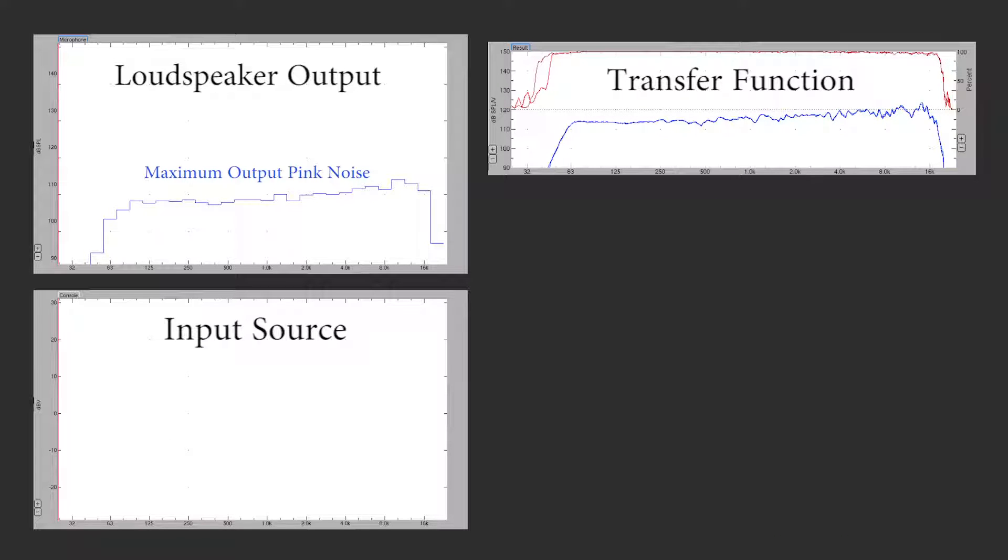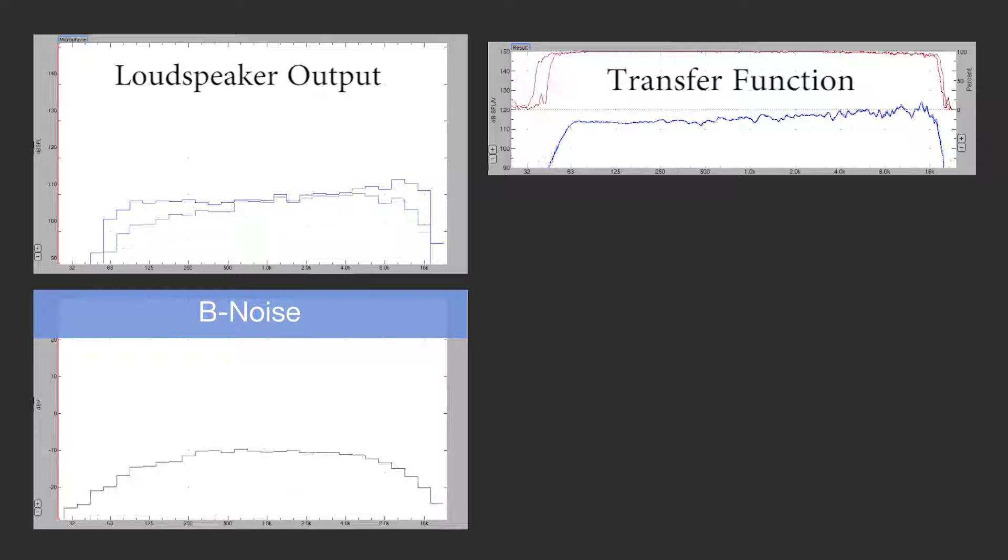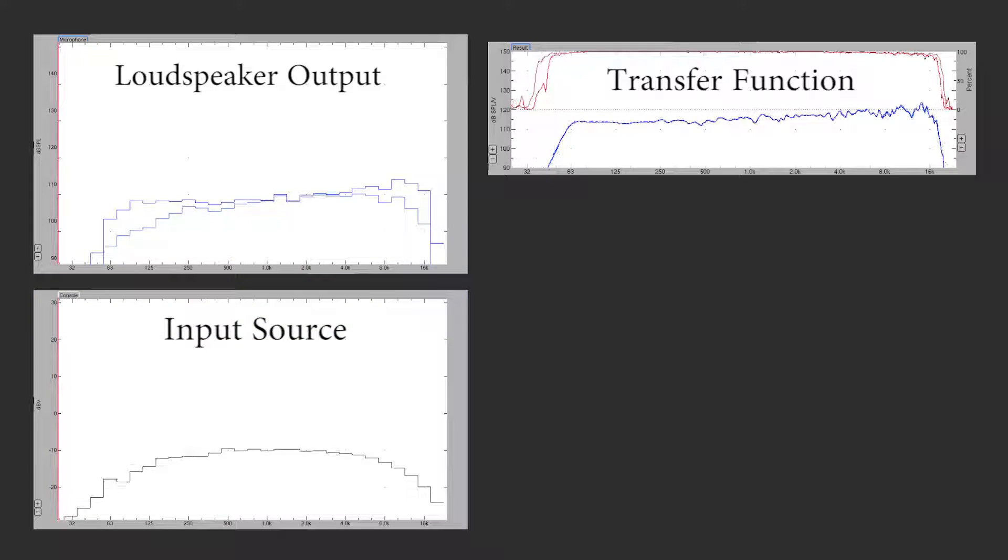Now that we've verified the MAP pink noise data, let's apply B noise, the other input signal used to generate MAP data. The bandwidth of B noise is similar to human speech, which makes it a good signal to evaluate speech-only reproduction.